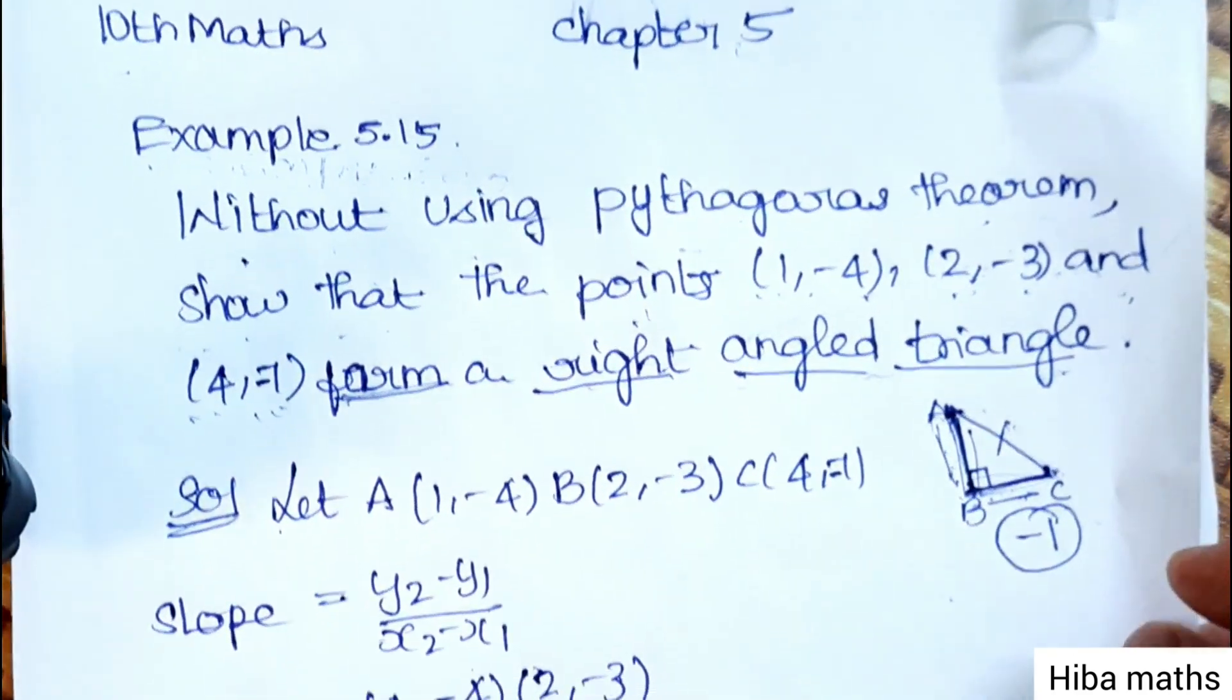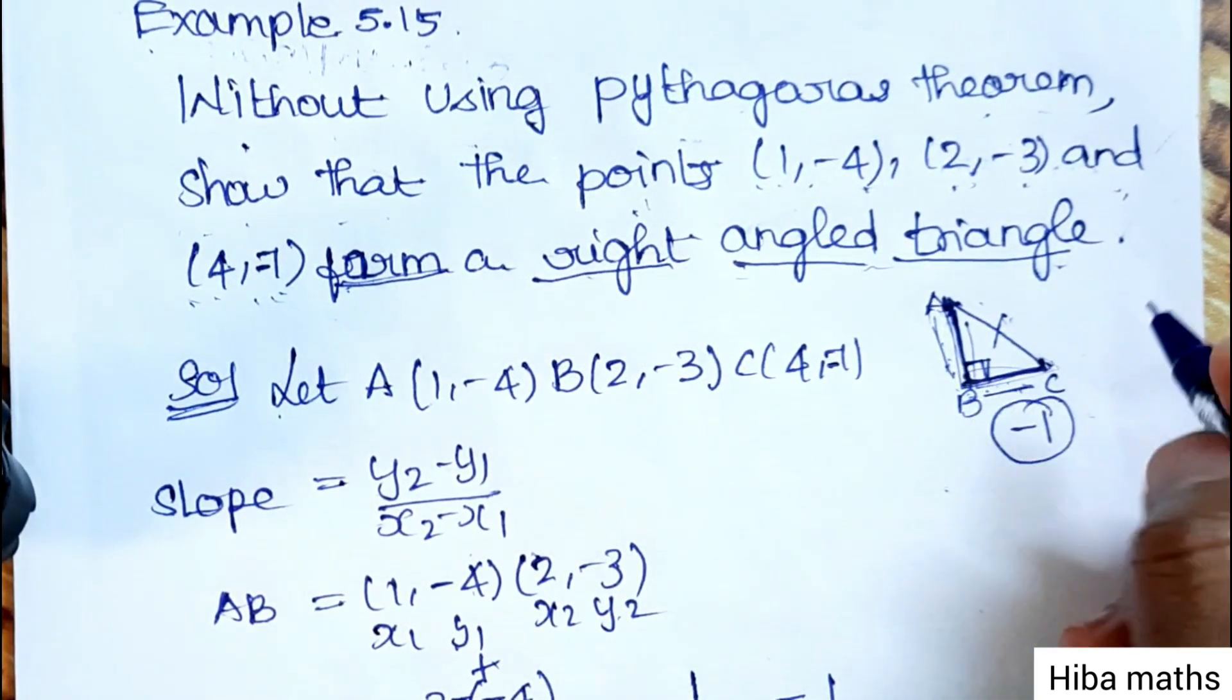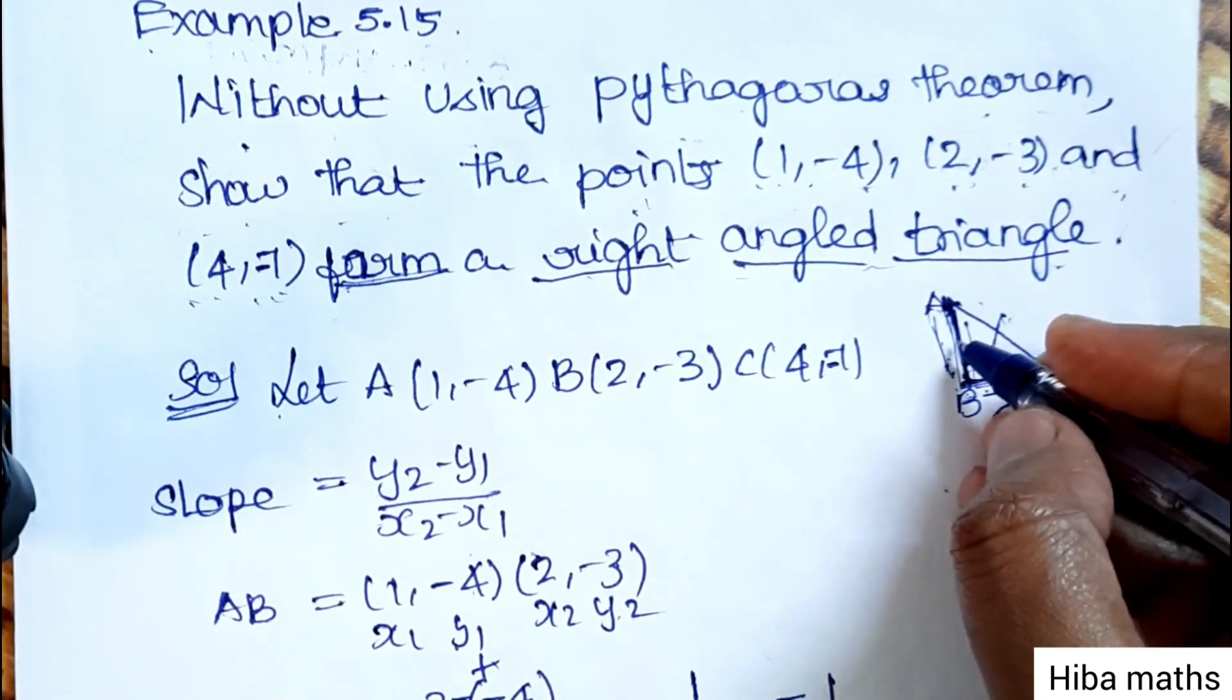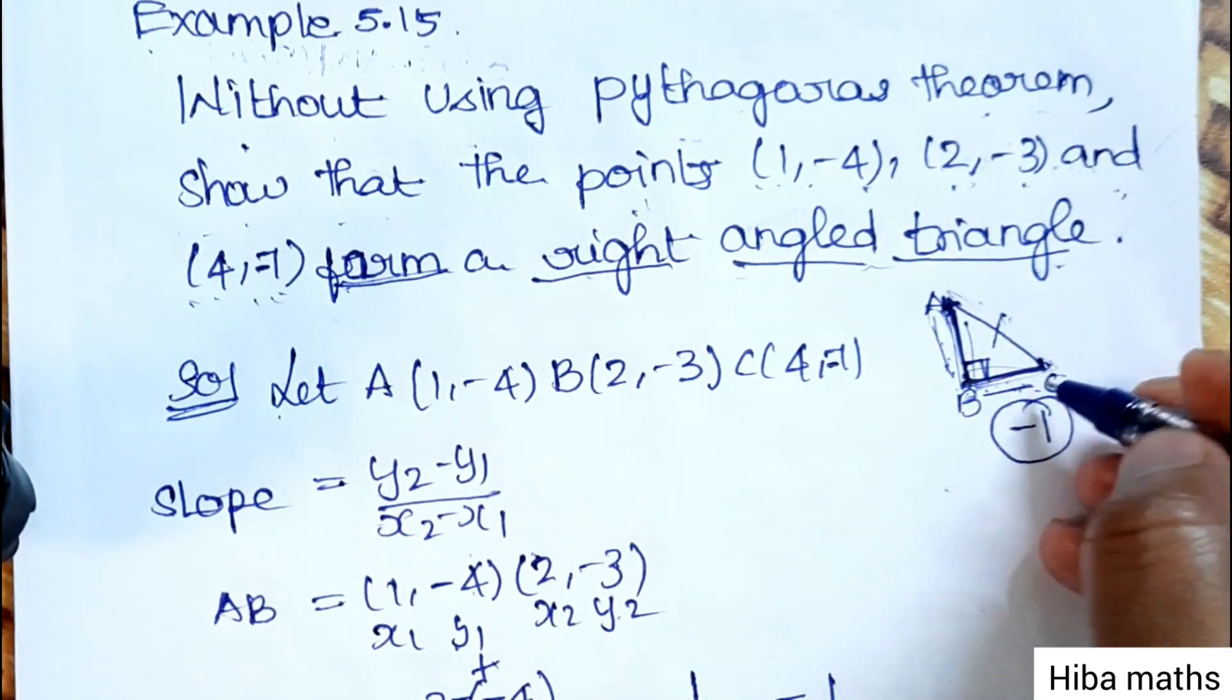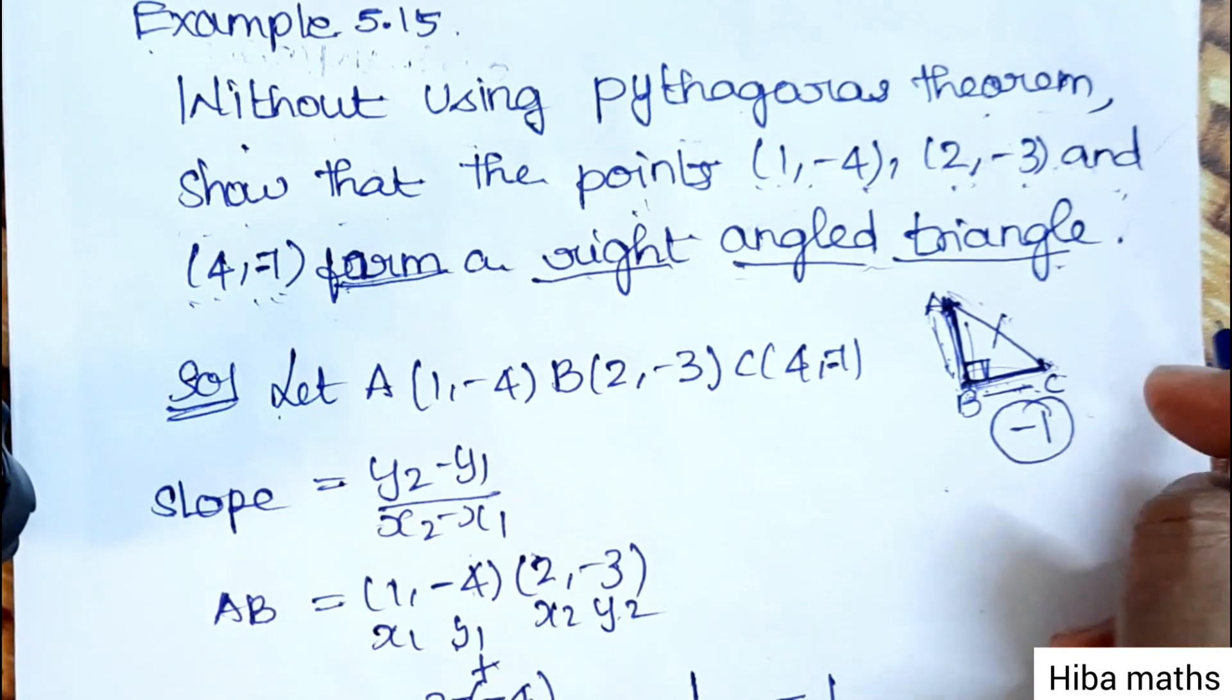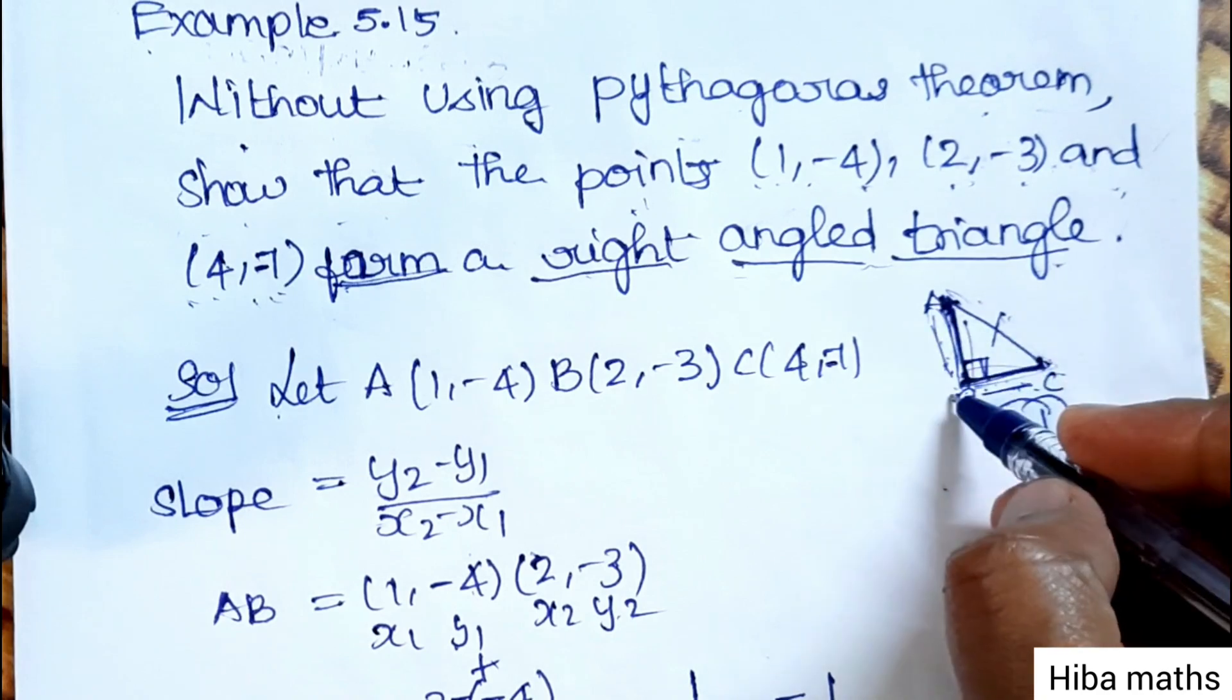We will prove that the two lines are 90 degrees, AB, BC, or AC. So how do we use slope formula? We will use the slope of AB, BC, and AC to prove this.